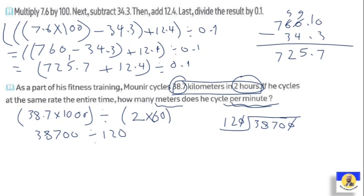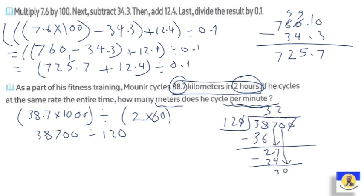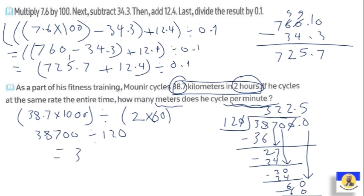3870 divided by 12: 3 by 12 is 36, make minus, remainder 2, put 7 down — 27 divided by 12 is 2, that's 24, make minus, remainder 3, put 0 down — 30 divided by 12 is 2, that's 24, remainder 6. Put decimal point, bring down 0 — 60 divided by 12 equals 5, remainder 0. So the answer is 322.5 meters per minute.